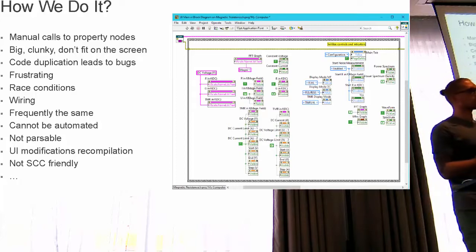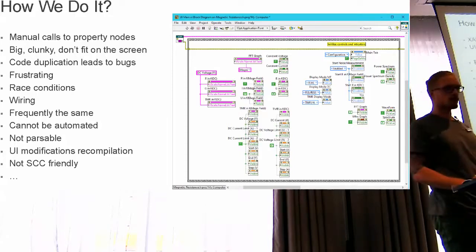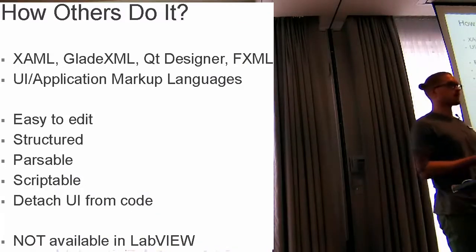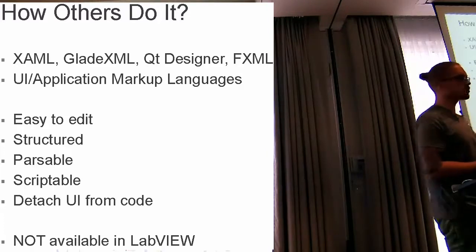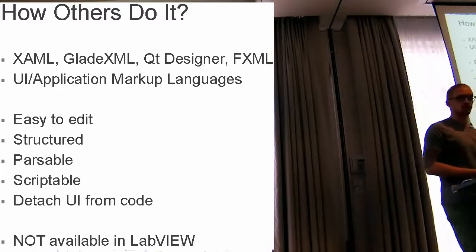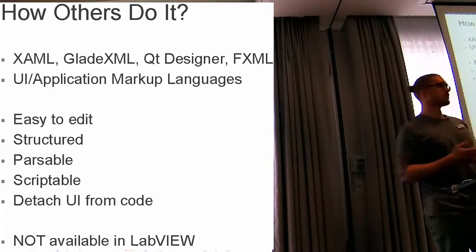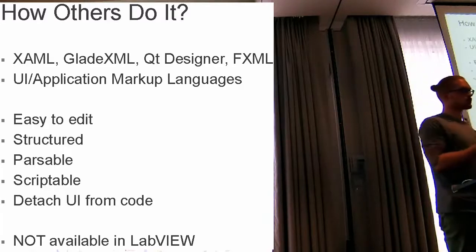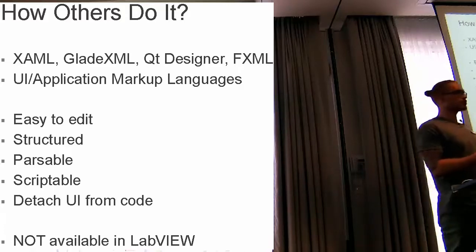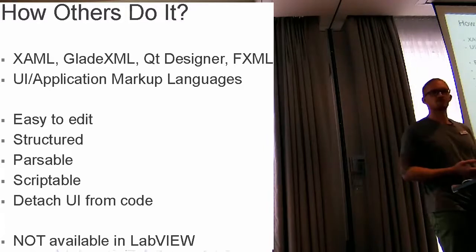Imagine a situation where you want to do a change to the user interface and you have to decompile your code — why? It's just one property I want to change; I don't want to modify the whole VI. So others do it using some kind of application markup language, like XAML with Microsoft. Essentially it boils down to text that describes the properties of the user interface — easy to edit, structured, parsable, scriptable. And most importantly, the UI definition is detached from the code itself, so if you need to make changes you don't need to recompile the executable — you just provide a new configuration file to the customer. This is not available in LabVIEW, unfortunately.